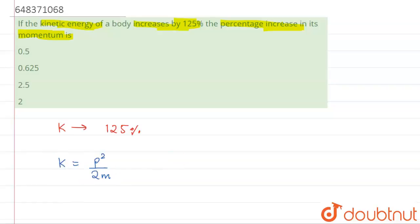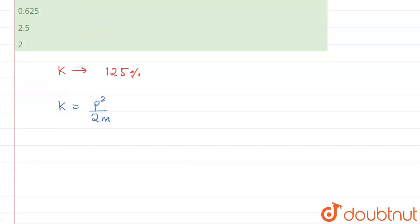So you can clearly see that kinetic energy is dependent on the square of momentum. That means any change in kinetic energy divided by k must be equal to two times of change in momentum divided by p, because this 2m is a constant quantity and the square will come in front.